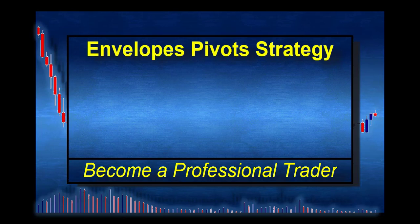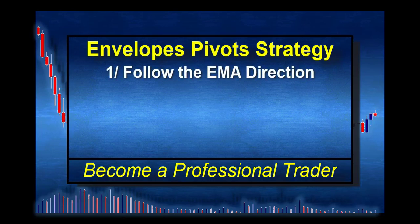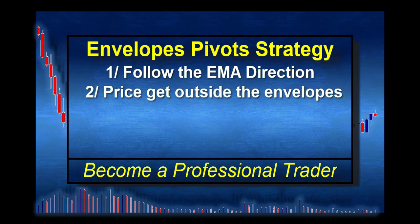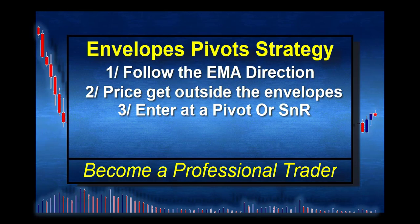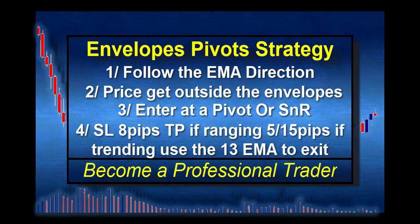To summarize, I repeat the rules. First rule: you want to go with the trend, or if it's flat, you trade both ways. Second: you wait for the price to be outside the band. Last: you wait for the price to touch a pivot point or a hard level, and you enter in an aggressive or conservative way. You take your profit from 5 to 50 pips, and if the price is trending nicely, you can use the 13 EMA to take your profit, which can give you a lot of pips.